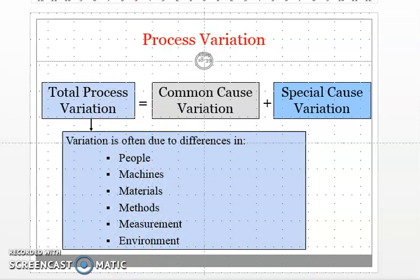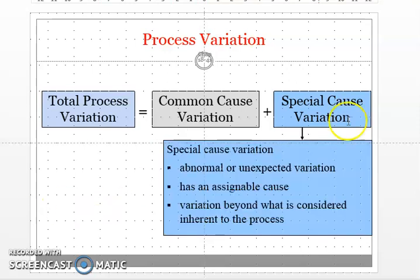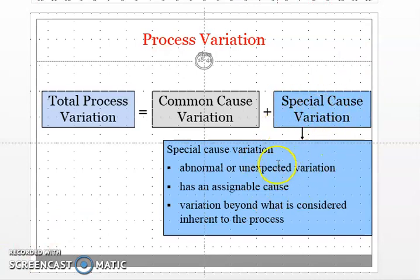Common causes of variation are naturally operating and expected causes, resulting from normal variations in materials, tools, operators, and the environment. Special causes, also called assignable causes, are due to abnormal or unexpected variations beyond what is considered inherent in the process. We can control special cause variation but not common cause variation. That is why total process variation can be reduced.